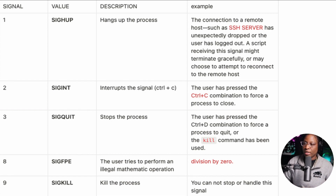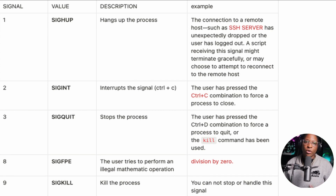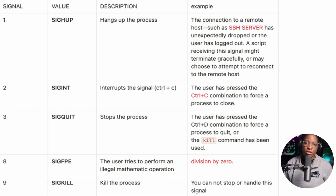For example, if you are connecting to an SSH server and the server disconnects, or you accidentally log out, two things can happen: either the program ended gracefully when you logged out, or if the connection dropped, it will try to reconnect you back to the server. Then you have the SIGINT signal, referenced with numeric value two.